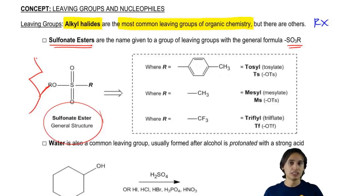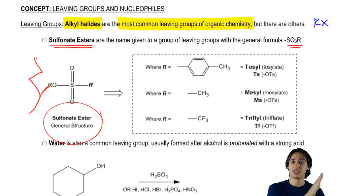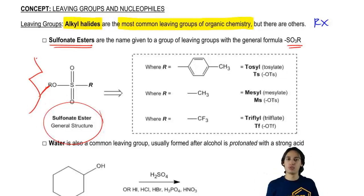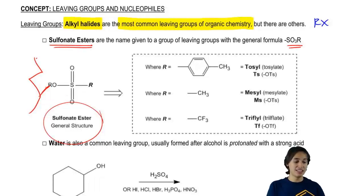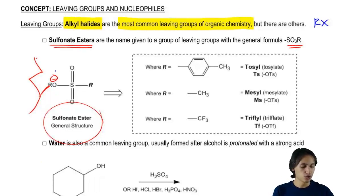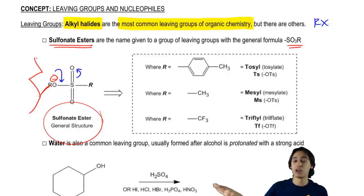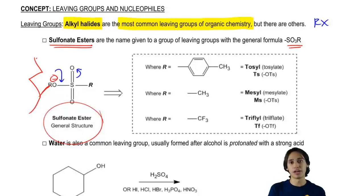Now, would we typically expect O to be a good leaving group? No. O is not as electronegative as a halide — it's further away on the scale — so we would expect O to not be a good leaving group, and O⁻ would be terrible. But this molecule is special because it can resonate so much. Once we get a negative charge there, it can resonate, form double bonds, and distribute that negative charge everywhere. So sulfonate esters turn out to be really, really good leaving groups — even better than alkyl halides in some cases because of all that resonance available.